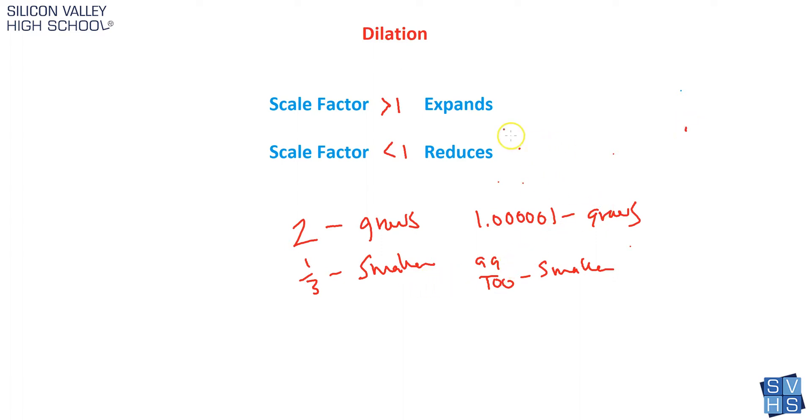Now let's do one. And the cool thing is to do dilations, you don't really even need to draw the coordinate plane, draw the picture. If you're given the points, you can multiply each point by the scale factor to find the new point. So let's do one example.